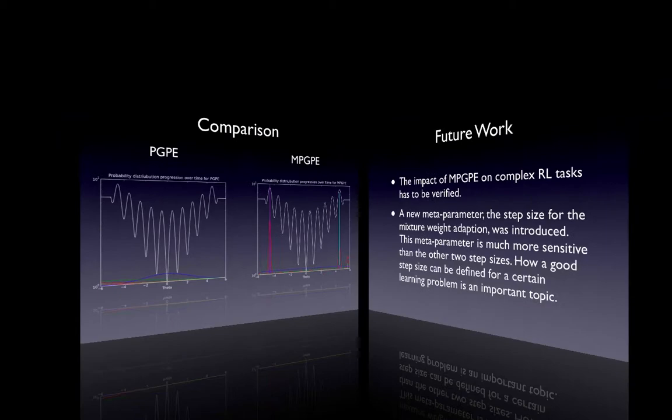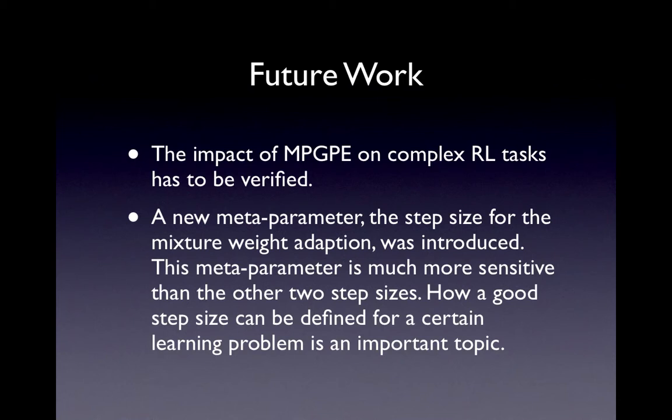For the future we have to verify the findings on complex tasks. Very important is to find a way to estimate the new step size parameter for the mixing coefficient. This is the major drawback of MultiPGPE. The defining property of PGPE is that it only needs three meta-parameters that can be set very easily, and the two step sizes can handle a very wide range of problems with the standard settings.